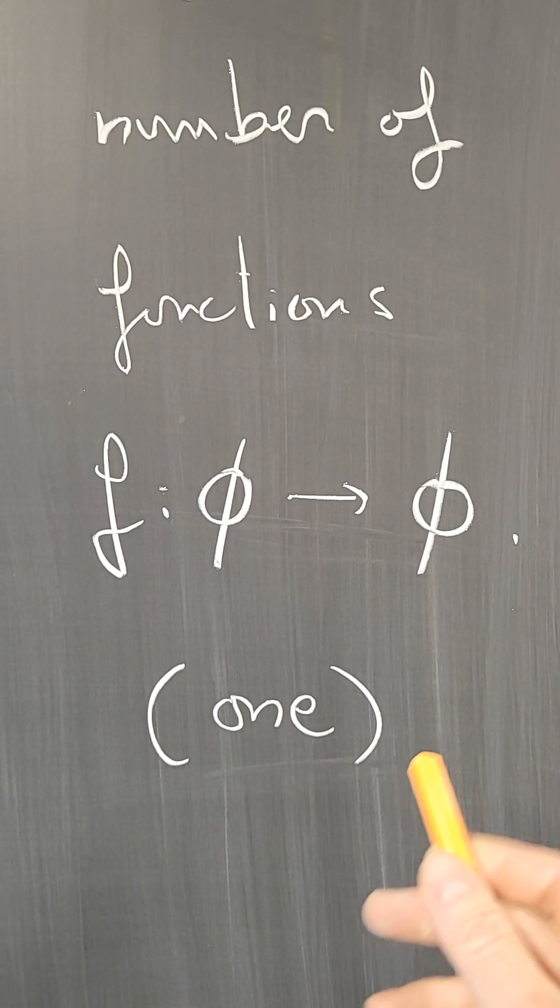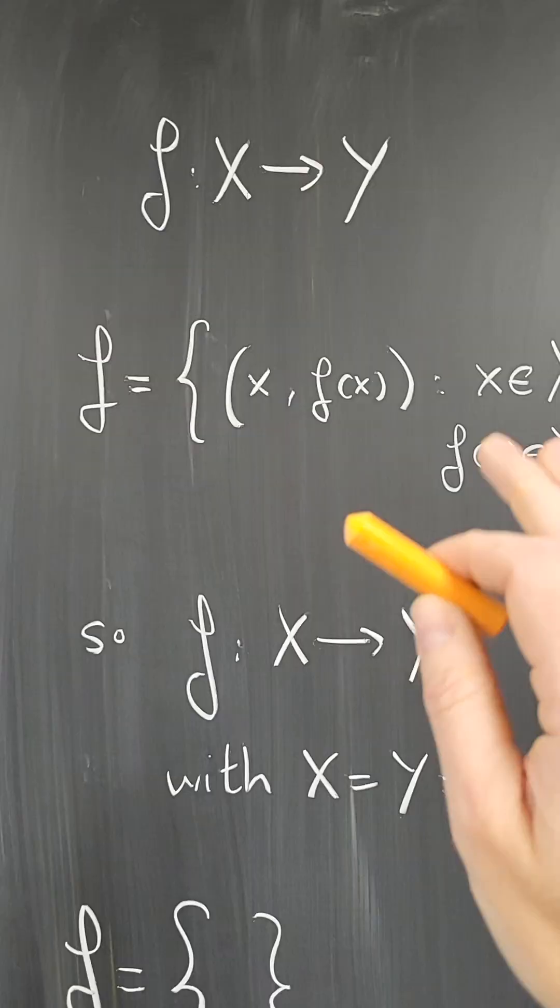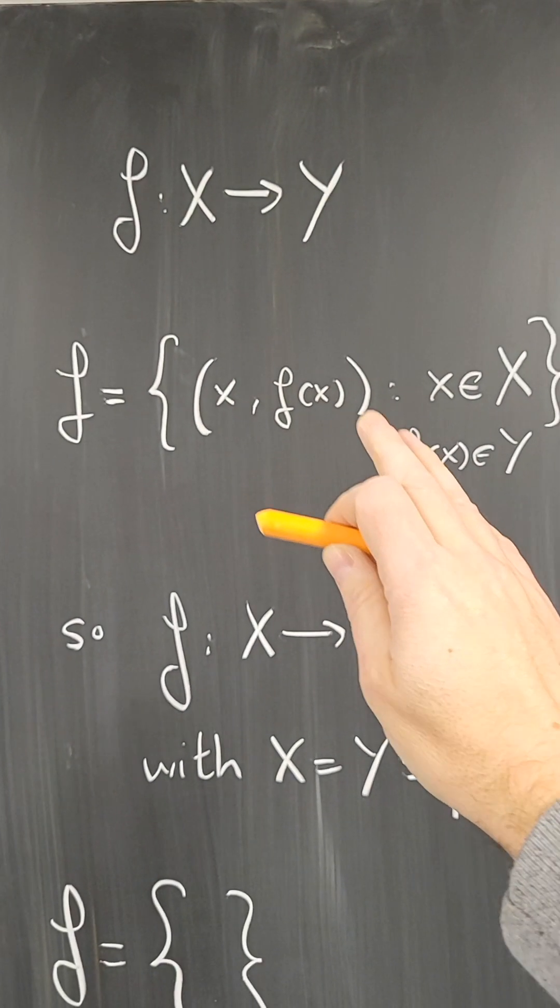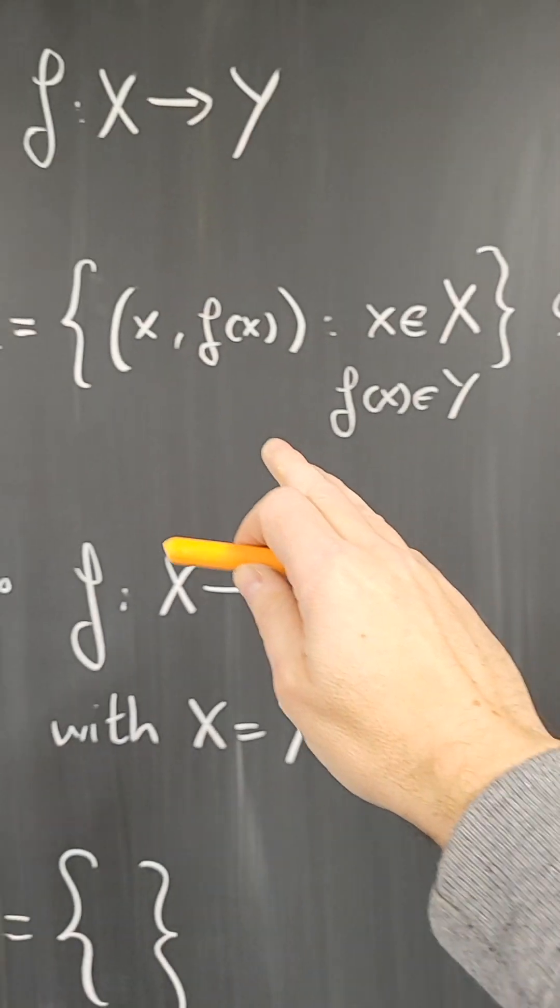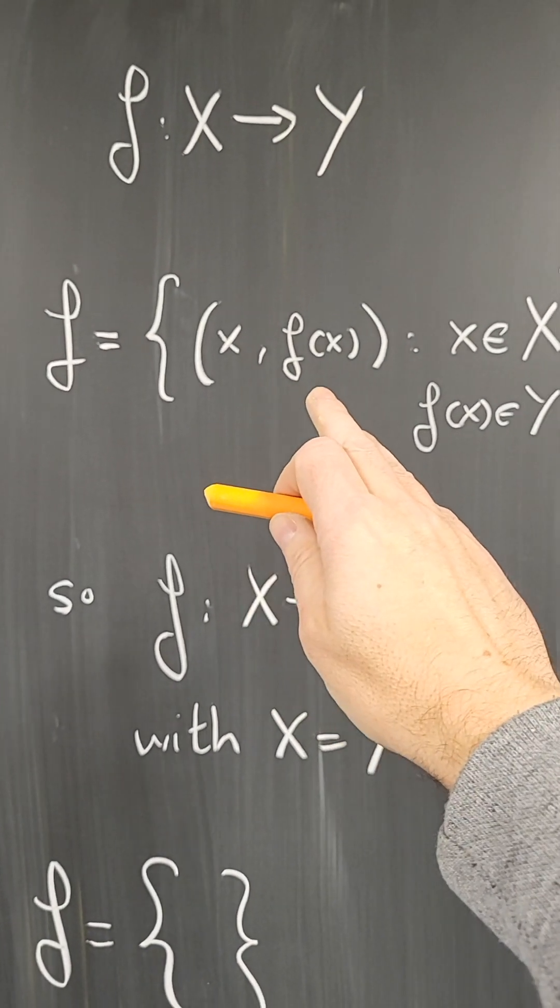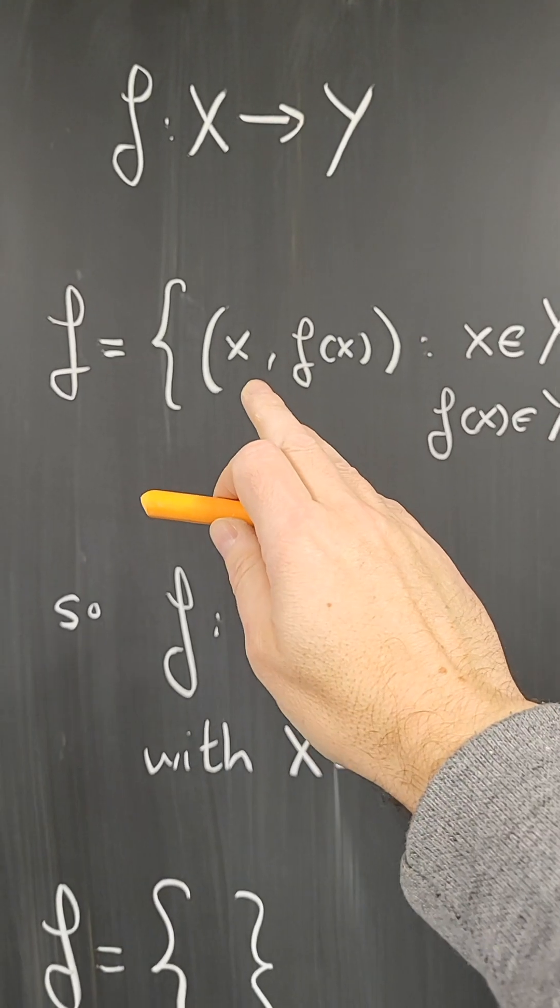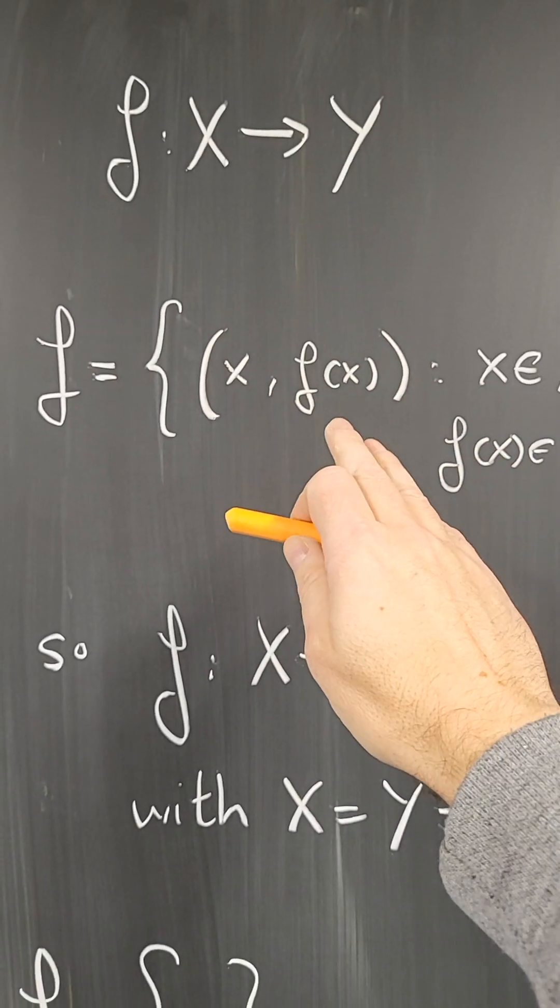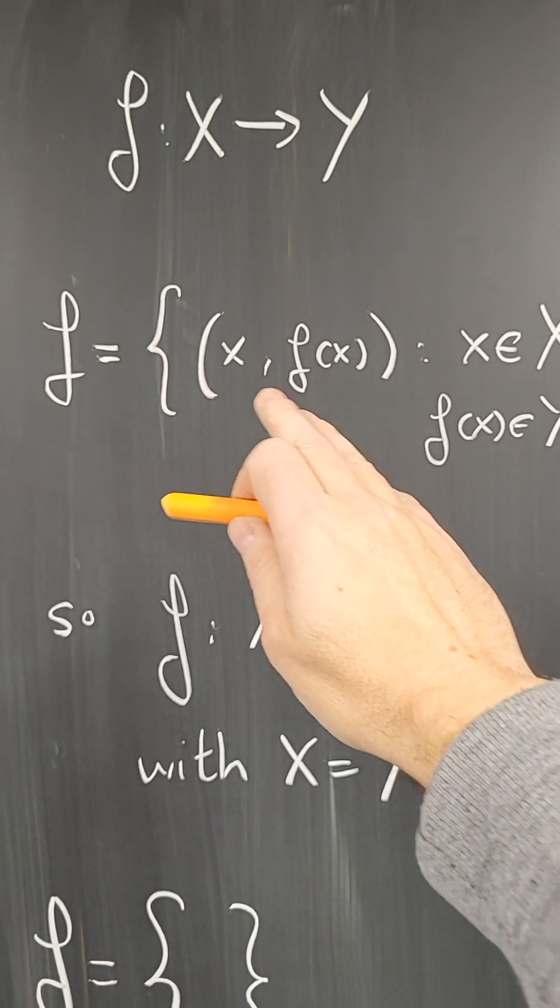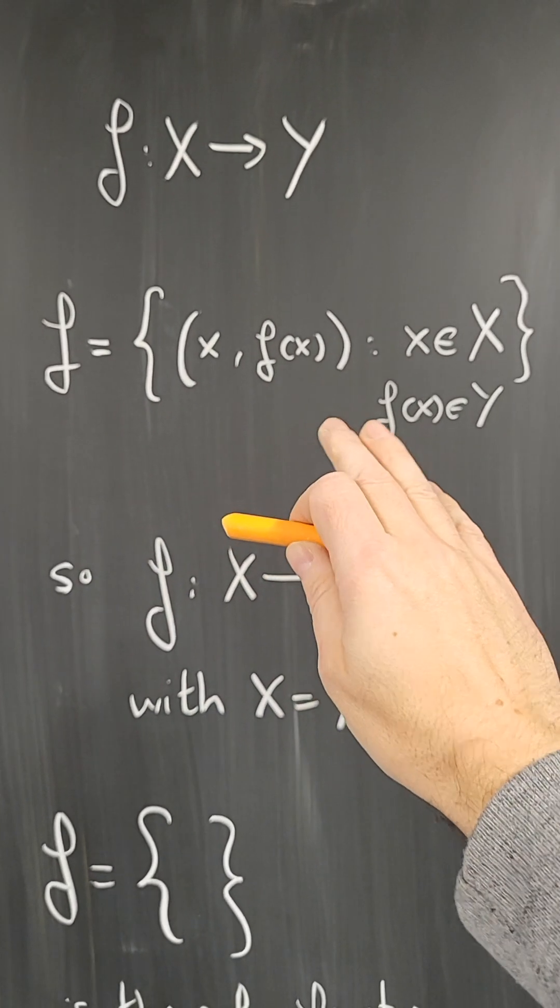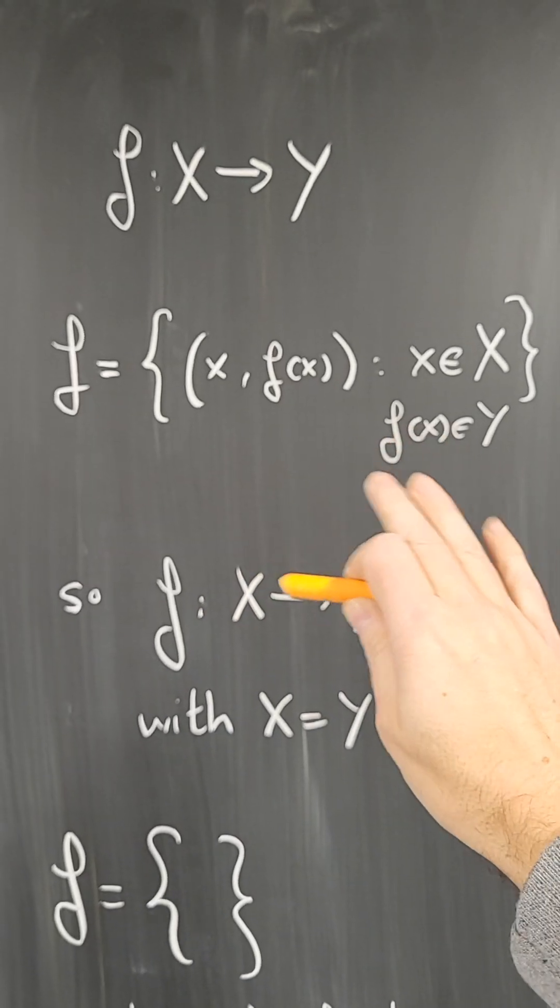Why is that? Because of the definition of function. A function from x to y from the set theory point of view is a subset of x cross y, so pairs or tuples of elements of x and elements in y, such that for every element in x, there is exactly one element in y, which we call f of x, such that the pair x, f of x is in the set f. That is a function from the set theory point of view.